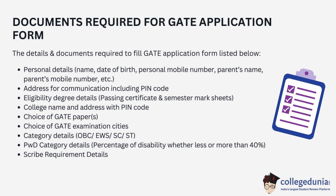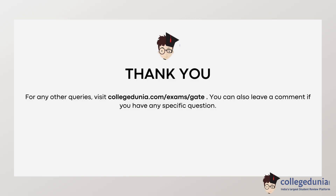Number two, address for communication including your PIN code. Number three, eligibility degree details — that is the passing certificate and semester mark sheet, college name and address with PIN code. Additionally, your choice of GATE papers, choice of GATE exam cities, category details if you are OBC, EWS, SC or ST, PWD category as required, and finally scribe requirement details. That's all for today.